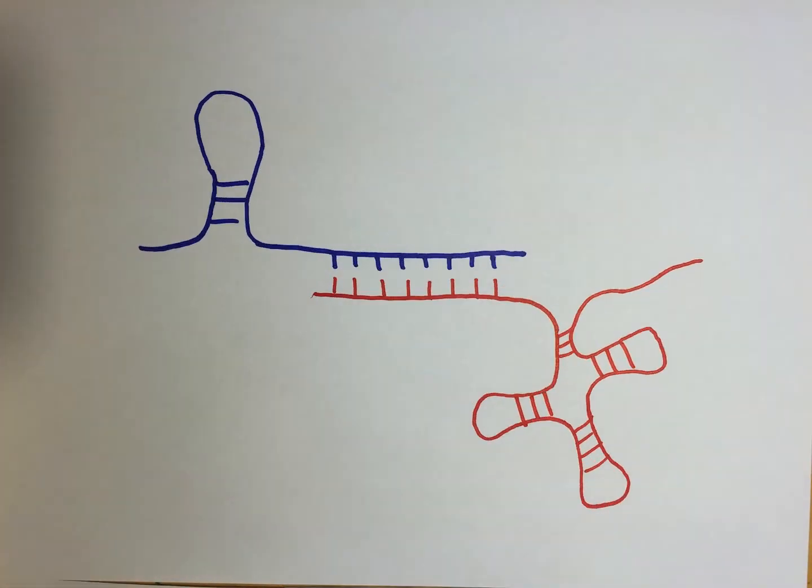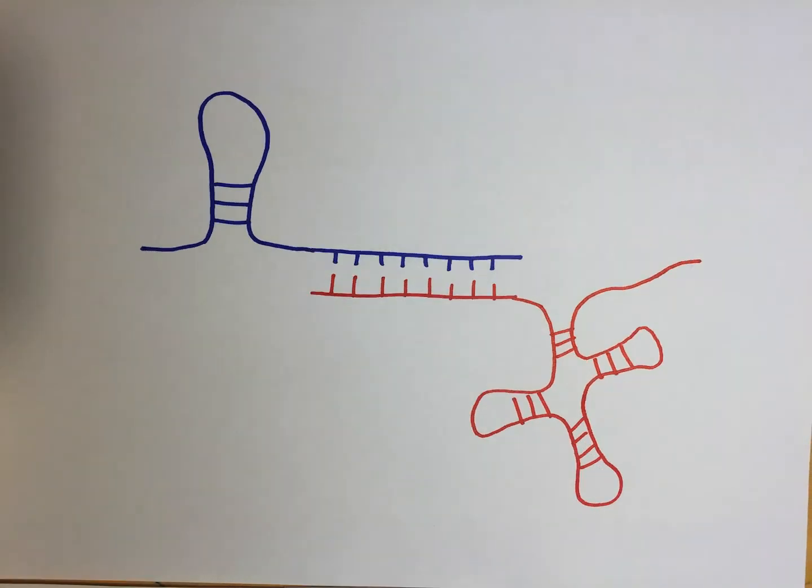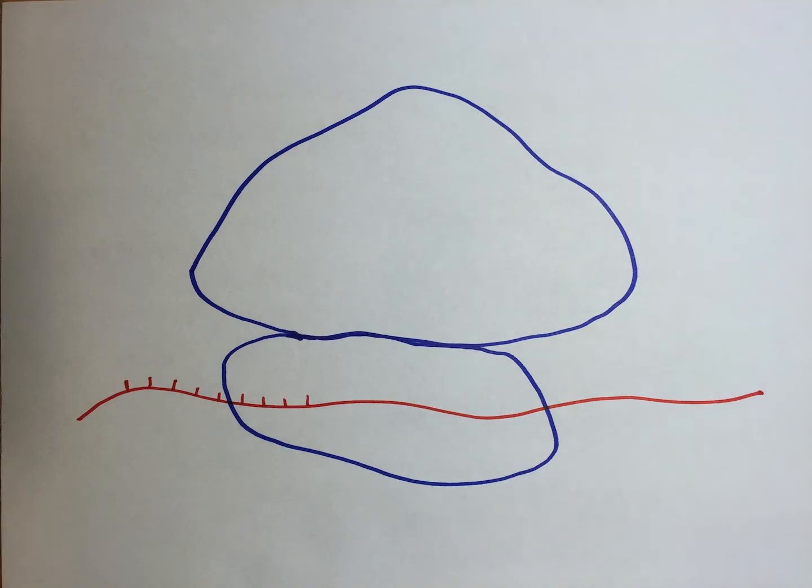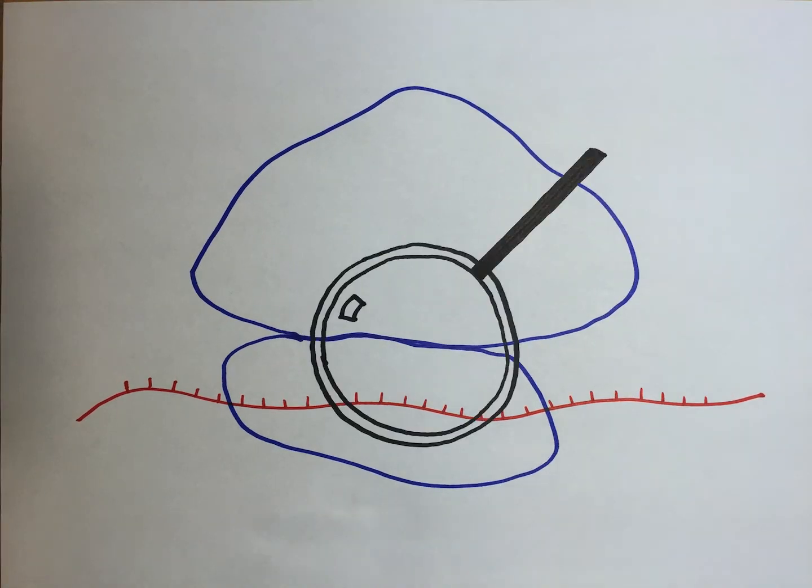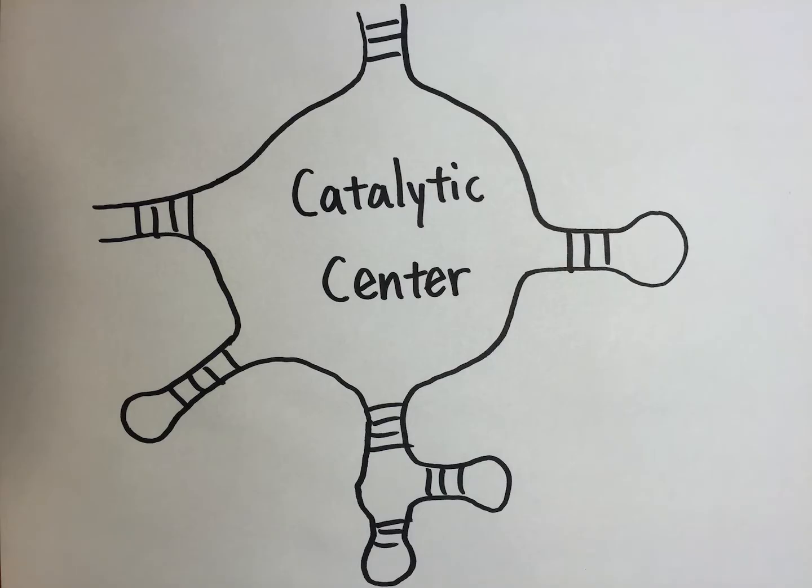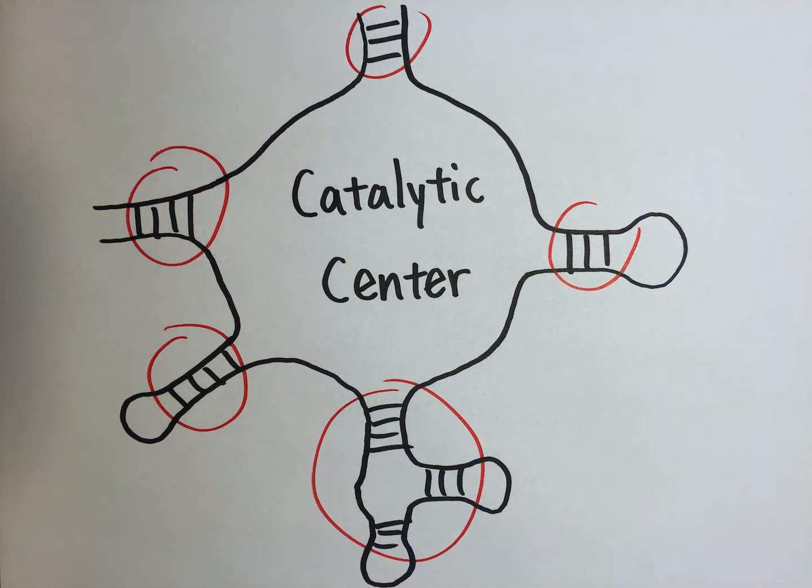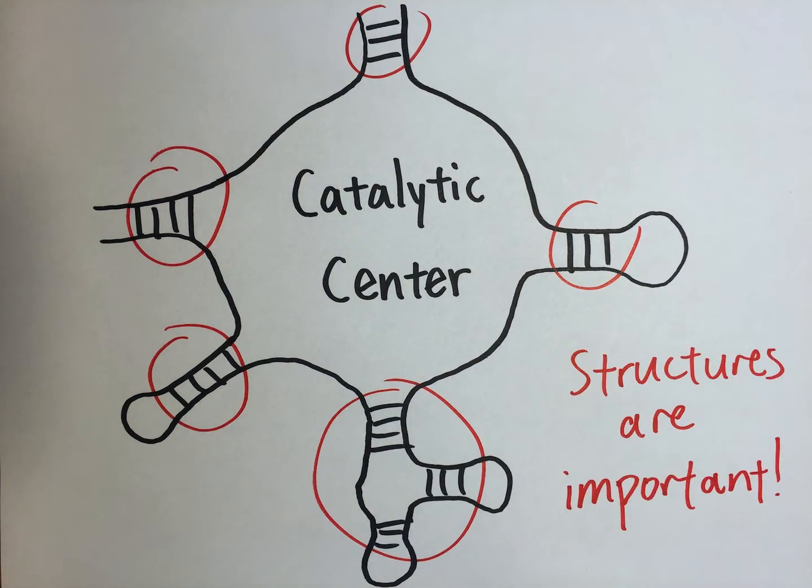Base pairing is the dominating force in both RNA structures and interactions. Structured RNAs play important roles in all types of cellular processes. For example, the catalytic center of the ribosome is entirely made up of RNA structures. Therefore, we need to study the structures to understand the functions of RNA.